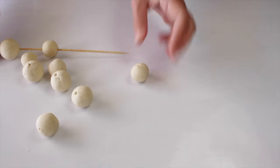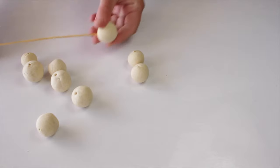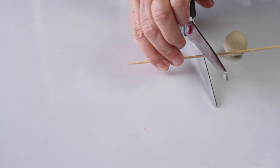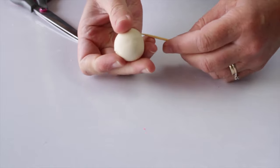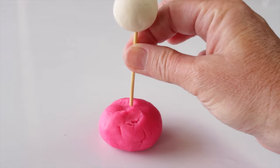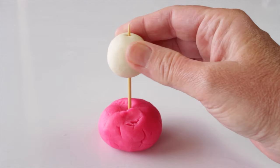Once the beads have cooled completely, take them off the skewer. Cut a small piece of wooden skewer, place one of the beads onto it, and stand the skewer in some play-doh. This will hold the bead in place while you paint.